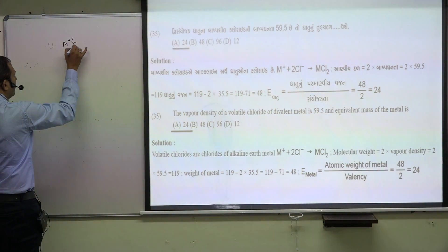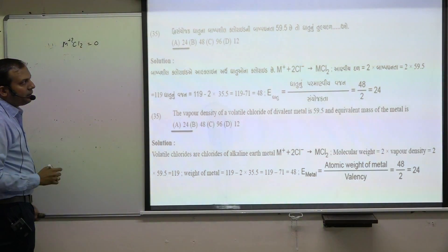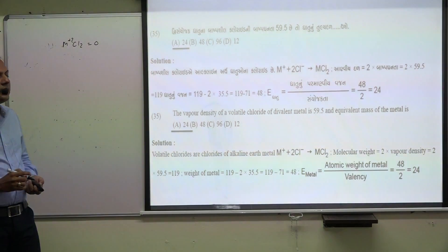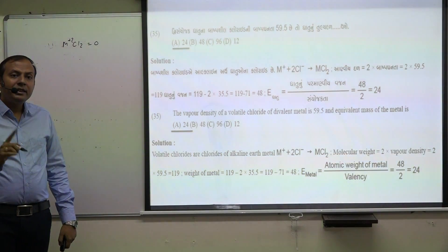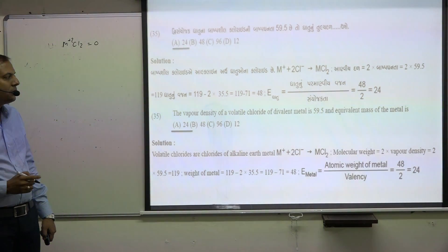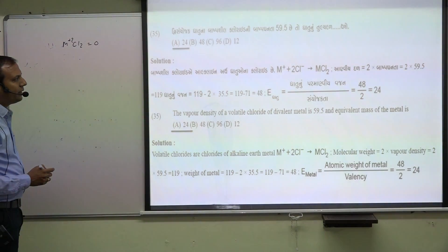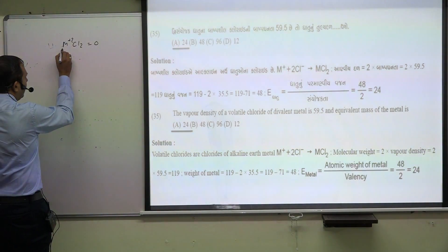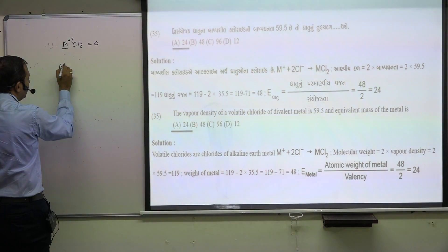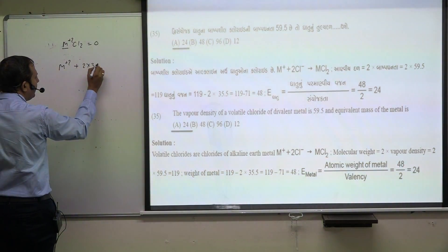A metal chloride problem where chlorine is Cl2, so charge is zero. Given the vapor density, molecular mass equals two times vapor density. For the metal with chlorine, M plus 2 times 35.5 for chlorine...